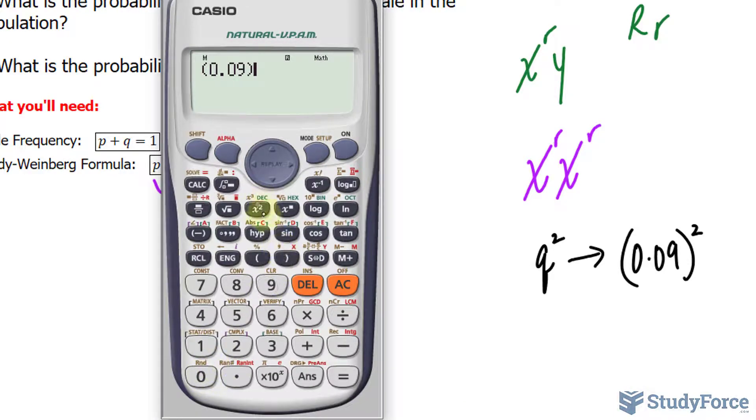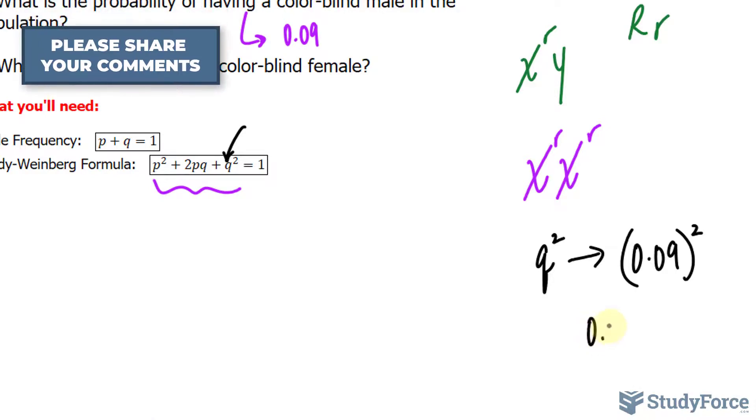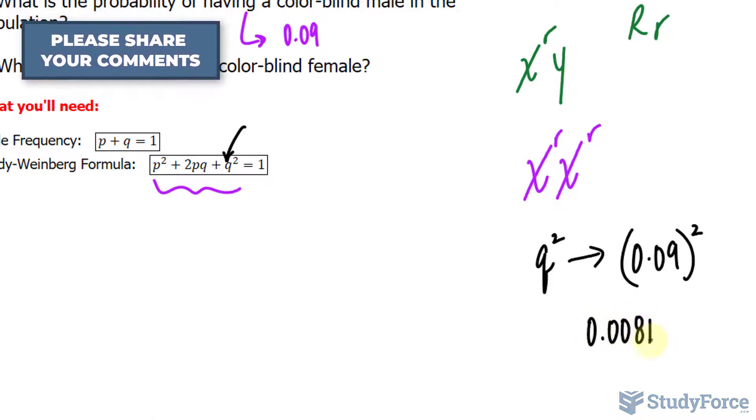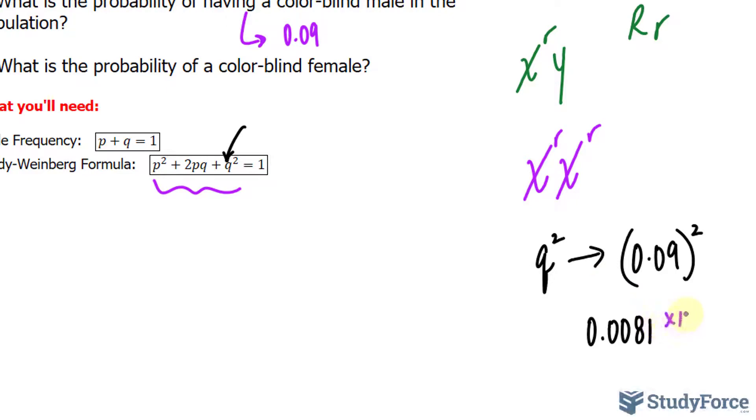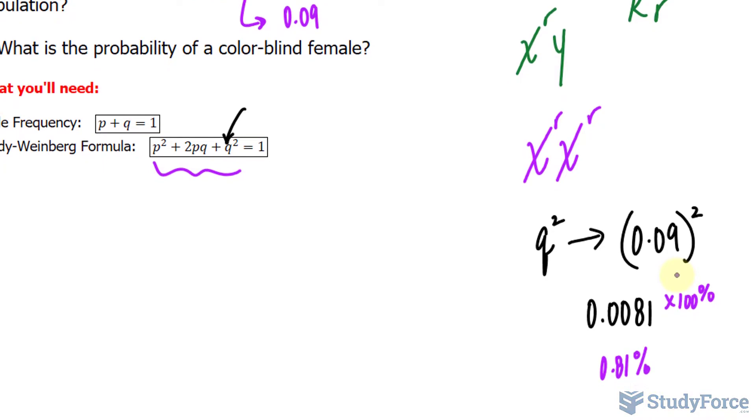So 0.09 to the power of 2 makes 0.0081. And that's not a percentage, although you can make it a percentage by multiplying by 100%. And it's a 0.81% chance that a female in this population will be born with colorblindness.